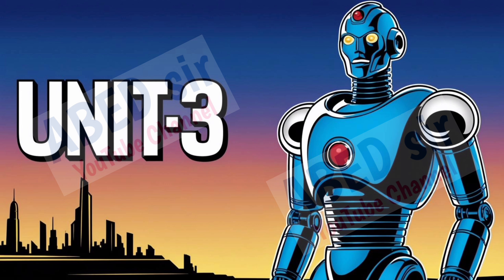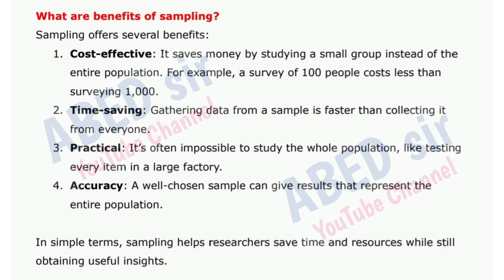Next, third unit. First important short question: What are the benefits of sampling? Sampling offers several benefits. 1. Cost-effective: it saves money by studying a small group instead of the entire population — a survey of 100 people costs less than surveying 1,000. 2. Time-saving: gathering data from a sample is faster than collecting it from everyone. 3. Practical: it's often impossible to study the whole population, like testing every item in a large factory. 4. Accuracy: a well-chosen sample can give results that represent the entire population. Sampling helps researchers save time and resources while still obtaining useful insights.